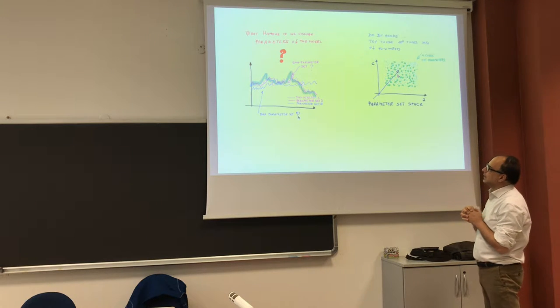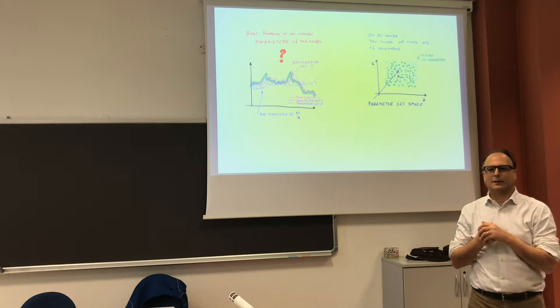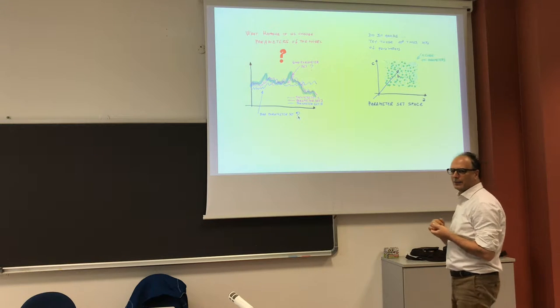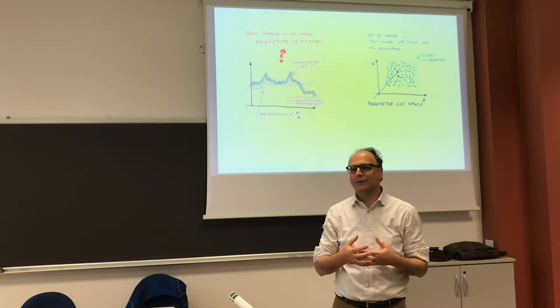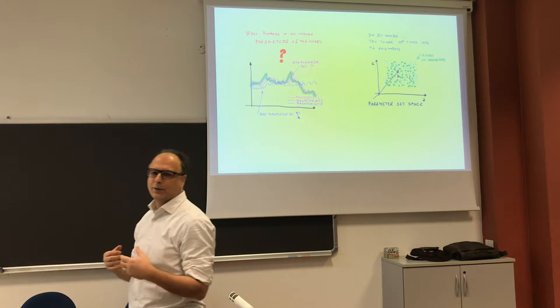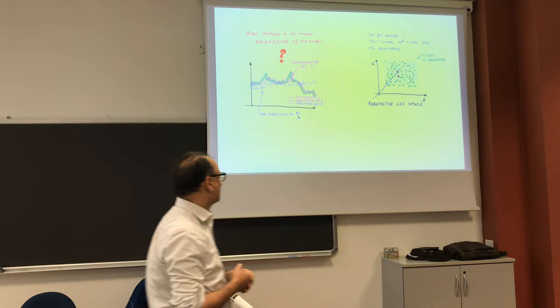Visually, we can maybe say that the good parameter set is the violet one. But we need something to say which is the best. And here we have a first problem. You can find an objective method to decide which is the best, but obviously the objective method is not objective per se. The procedure is objective, but the way you decide which is the best is subjective.